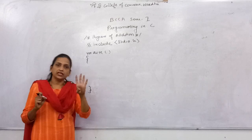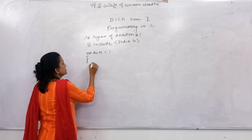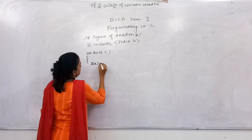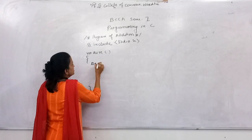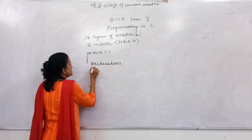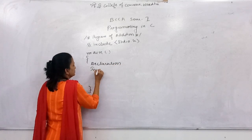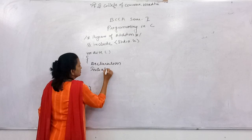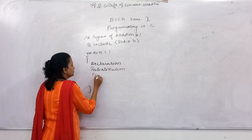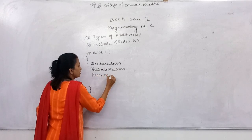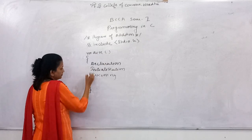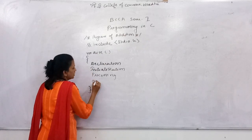In the main function, there are four sections. First is declaration. Second is initialization. Third is processing. And the last is output.